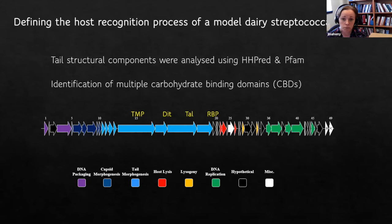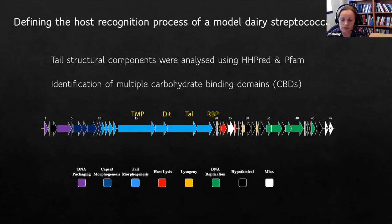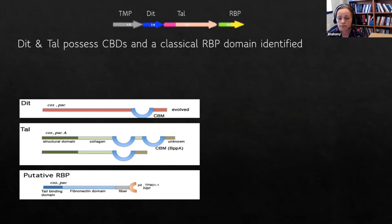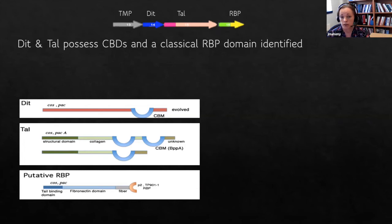When we did this analysis, we identified multiple proteins with carbohydrate binding domains, which links back to our saccharidic receptor. The DIT has a carbohydrate binding module, the TAL has two, and the previously assumed accessory gene has a classical RBP head domain — a very exciting finding. Sylvain Monod's group 15 years ago demonstrated that the TAL was responsible for phage-host interactions in dairy streptococci, identifying what they called variable regions one and two.